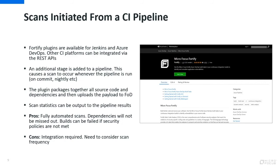You can also include scan statistics in your pipeline results. The pros of this approach are that it's a fully automated approach, and because you already build within that pipeline, dependencies will not be missed. Additionally, you can fail builds if the security policies you've defined on your tenant are not met. The con of this approach is that you have to do some integration work to integrate Fortify with your pipeline, but we make that reasonably easy for you.